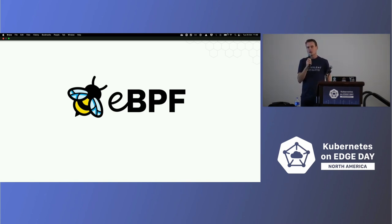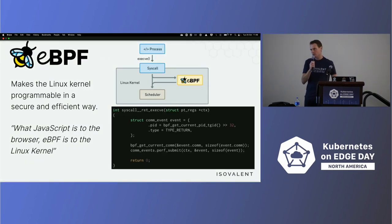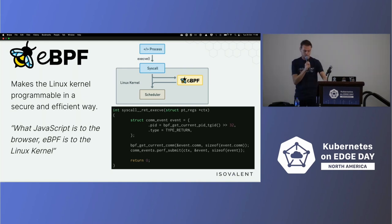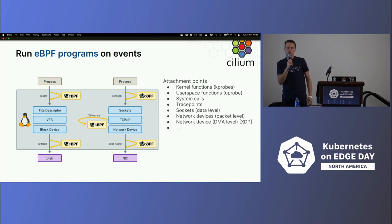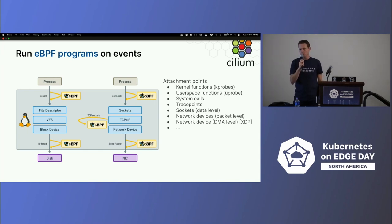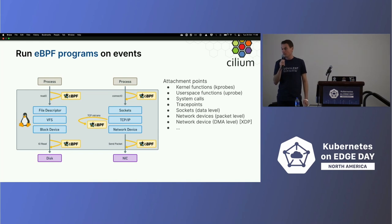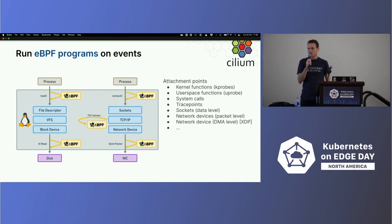Before we get started, to explain what eBPF is: we like to say what JavaScript is to the browser, eBPF is to the kernel. It makes the kernel programmable in a very efficient way without changing the actual kernel. What it allows us to do is, based on kernel events, attach eBPF programs. Today we focus on networking, but it can also apply to things like files, processes, and such. A kernel event can be something like a process opening a socket or a network interface sending a packet on the wire. All those events could trigger an eBPF program, and Cilium is built on that technology.